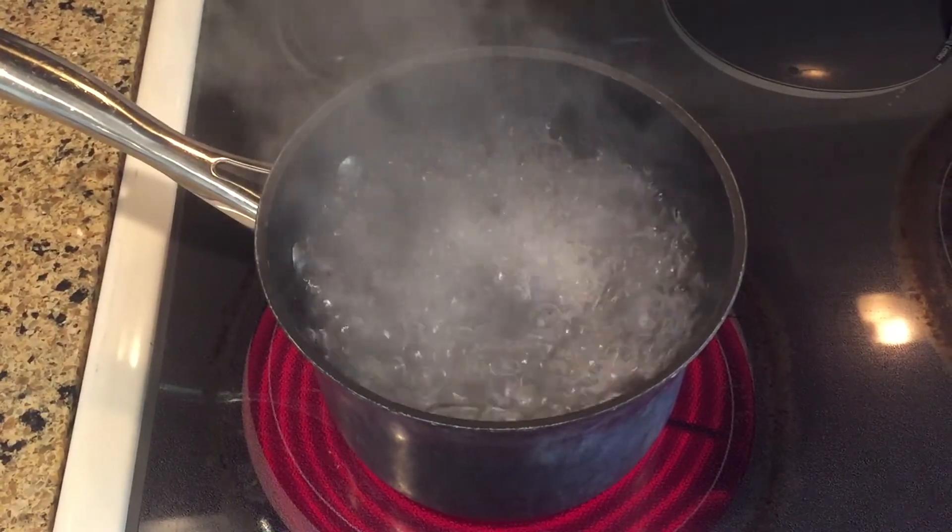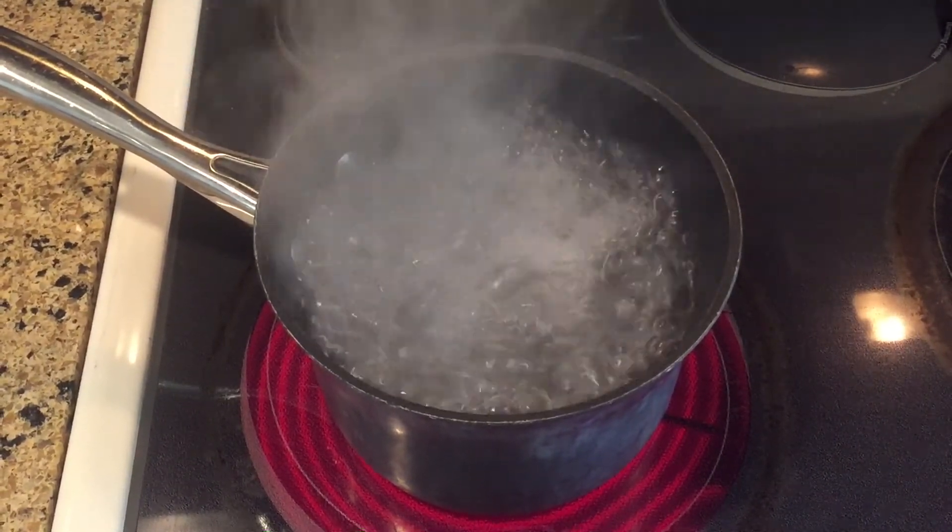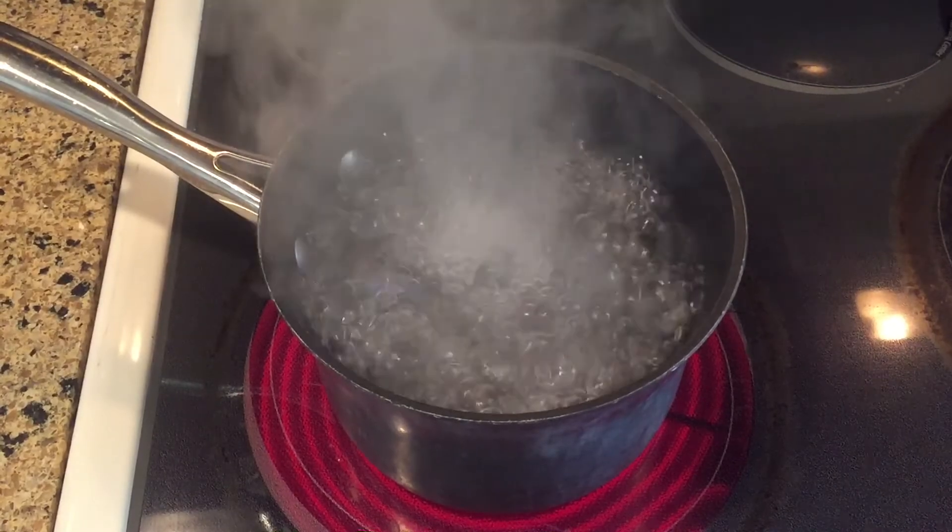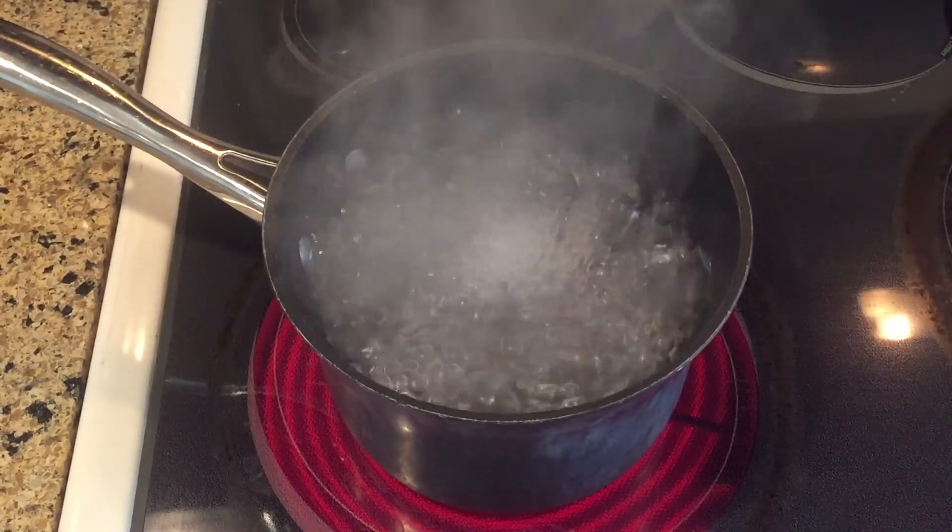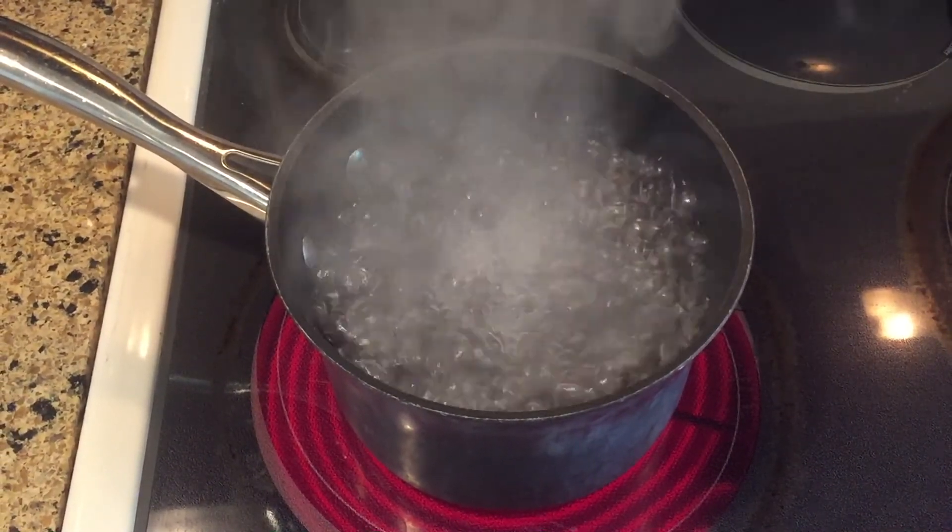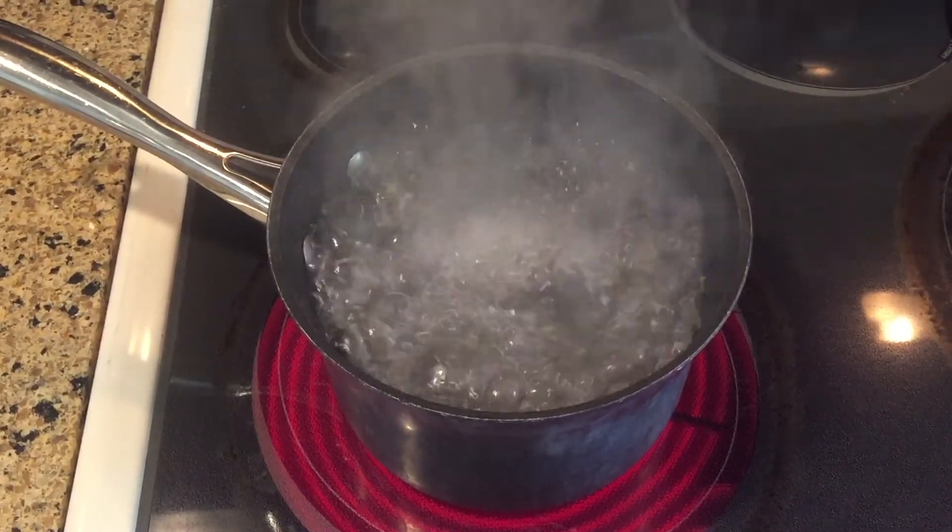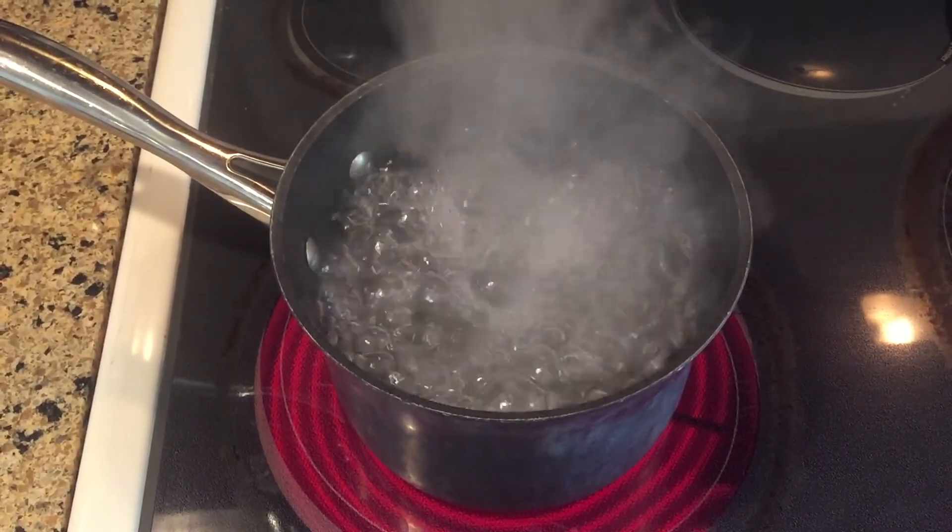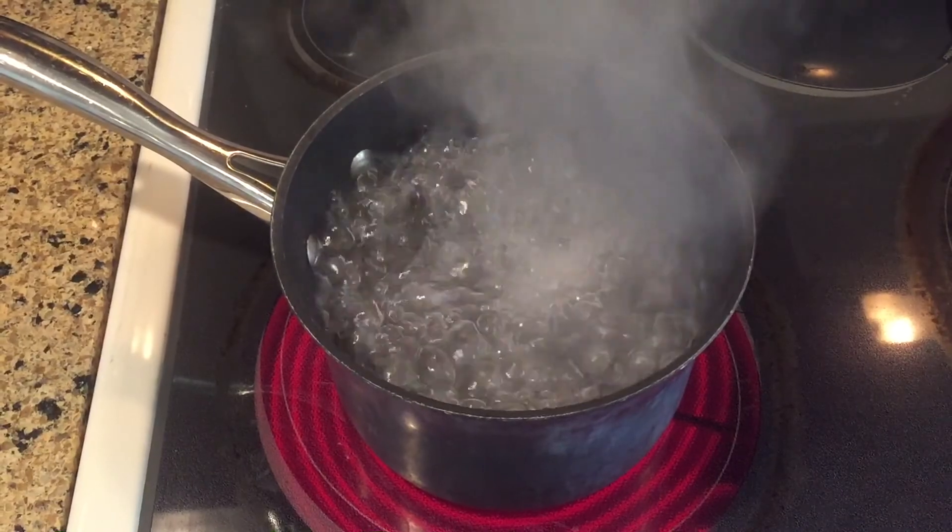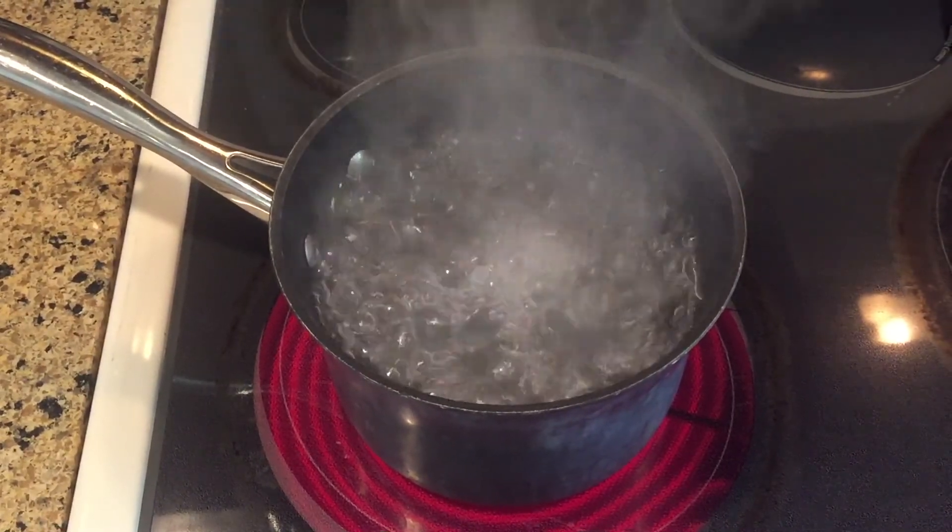Convection. In our pot of water, heat from the stove warms water at the bottom of the pot. This warm water decreases in density so it rises to the top of the pot where it begins to cool. Cooler water from the surface is slightly denser and sinks back towards the bottom of the pot, where it heats up again, repeating this process.